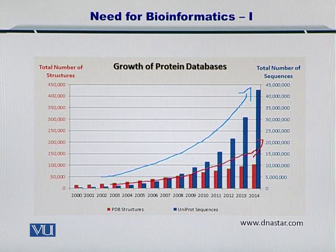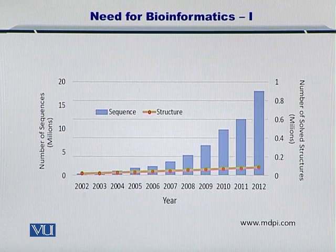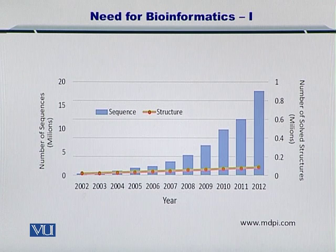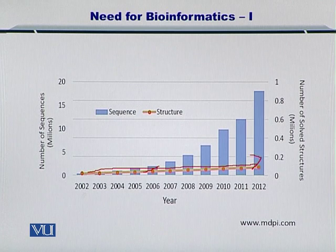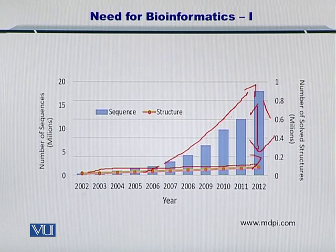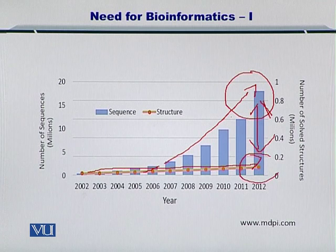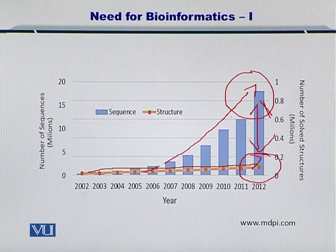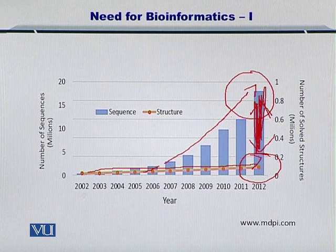More so, if you look carefully, the number of protein structures shown here in orange is actually different from the number of sequences. So there is a very big difference between the number of protein sequences that are known and the number of protein structures that are known. Using bioinformatics, we can also close this gap and try to find out the structures from the protein sequences. This is another job for the bioinformatician.